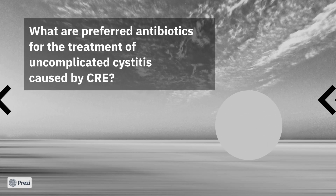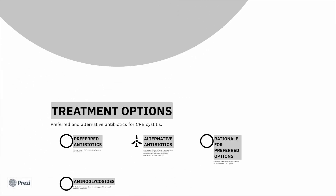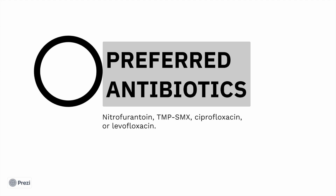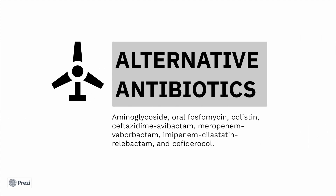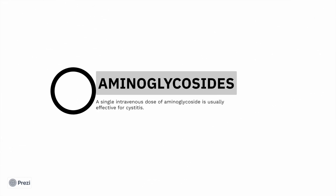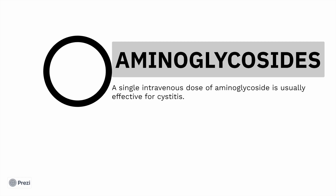The preferred antibiotics for treatment of uncomplicated cystitis due to CRE are nitrofurantoin, trimethoprim-sulfamethoxazole, ciprofloxacin, or levofloxacin. Alternatives include aminoglycosides, oral fosfomycin, colistin, ceftazidime-avibactam, meropenem-vaborbactam, imipenem-cilastatin-relebactam, and cefiderocol. These options are effective in CRE cystitis, and for aminoglycosides, a single dose is usually effective against cystitis.